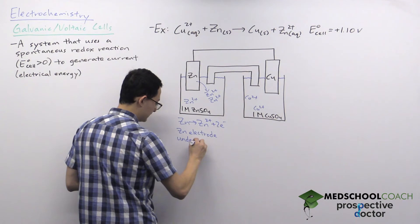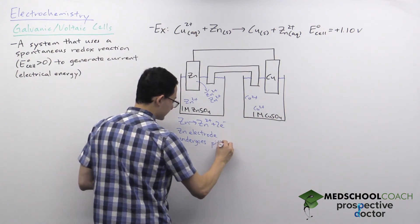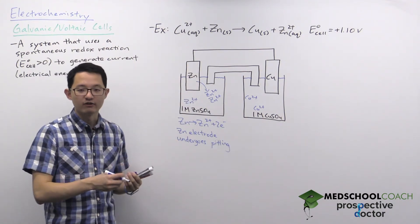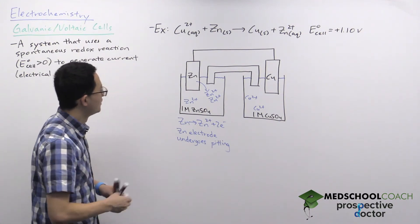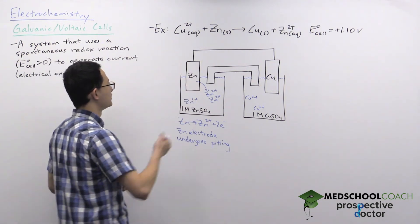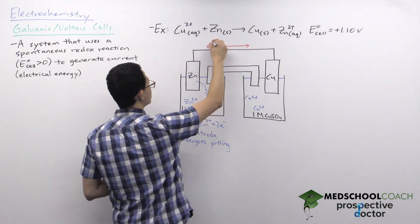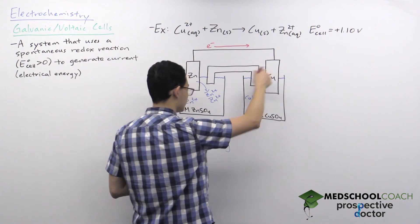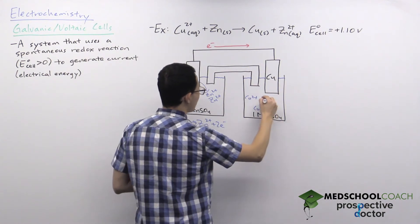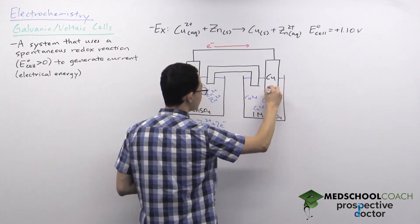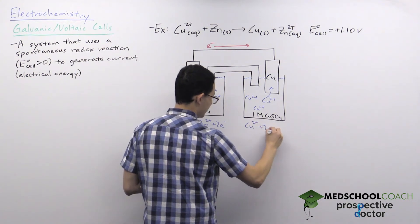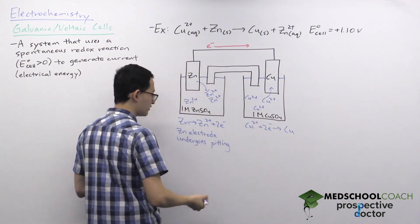We say the zinc electrode undergoes pitting — as zinc gets oxidized, pits form in the zinc electrode where the zinc metal has dissolved into zinc cations. Once zinc is oxidized and electrons are produced, those electrons travel through the electrical wire from the zinc electrode to the copper electrode, where copper cations in solution accept those electrons.